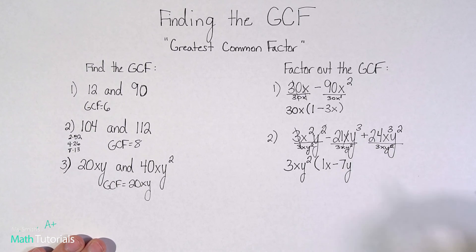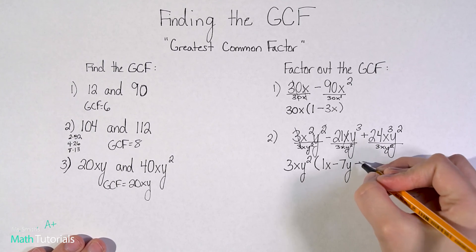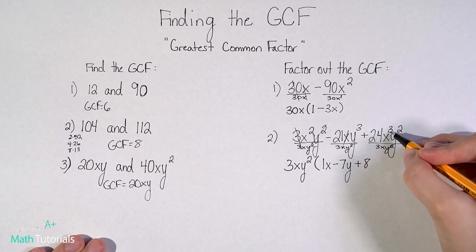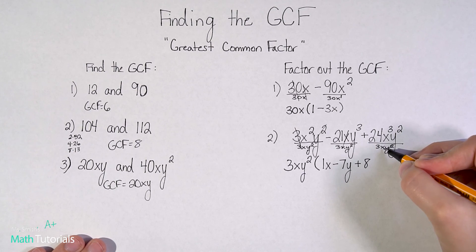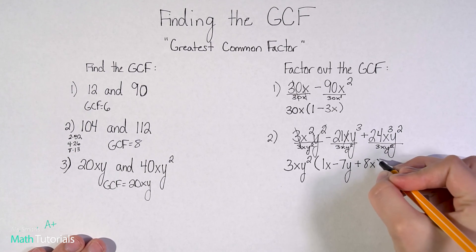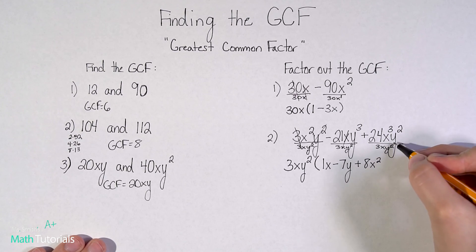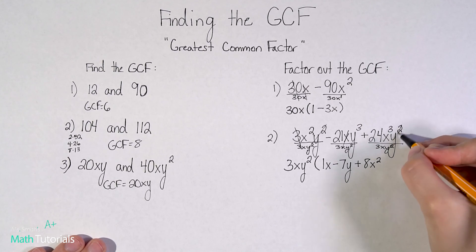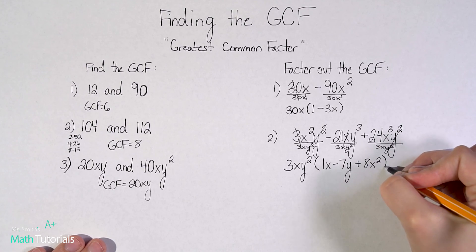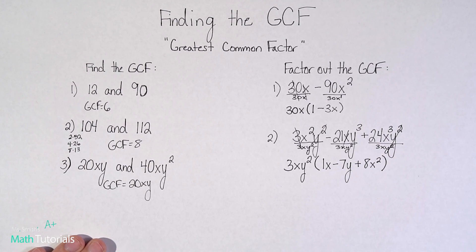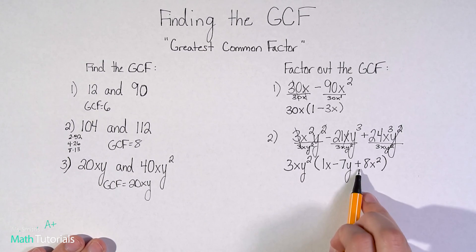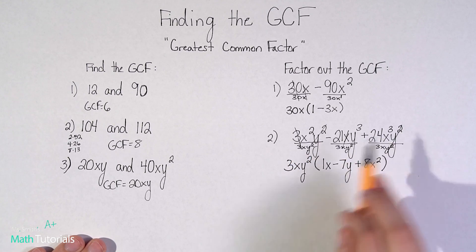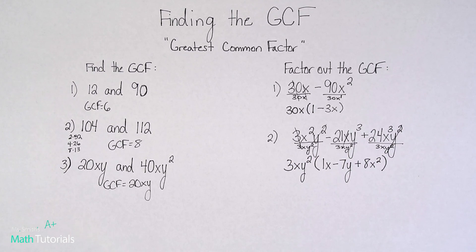Positive 24 divided by three. That would be positive eight. x cubed divided by x to the first. That would be x to the second. And y squared divided by y squared. Those would cancel out. So that's what I have left. So if I were to take this 3xy squared and distribute it back in through multiplying, I should get back to the original equation. So that is how we factor out the greatest common factor.